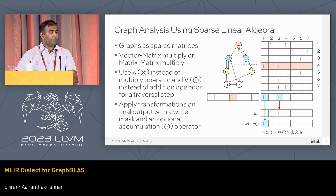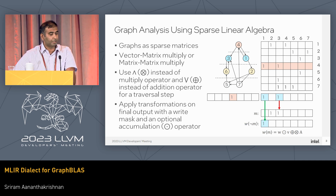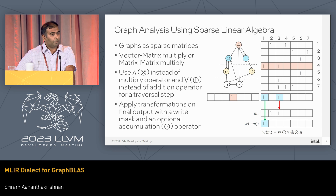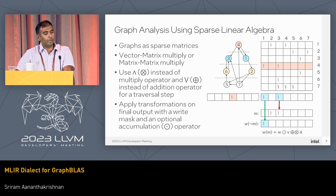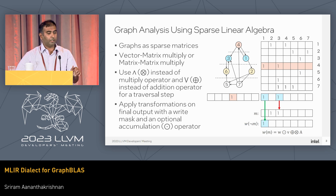For BFS, counting in-degree is overkill. We just need a frontier which has the bit set to 1 so we can explore the next set of vertices. To do this, instead of using scalar multiply or scalar add, we can use a logical AND and logical OR, and if we do the same process, we'll be computing the frontiers correctly.